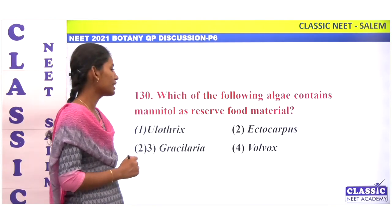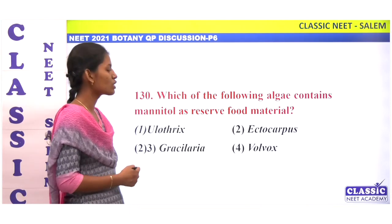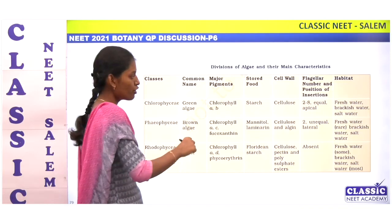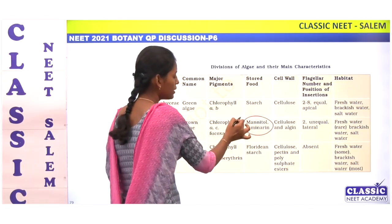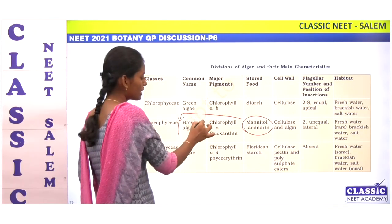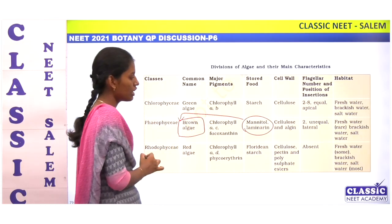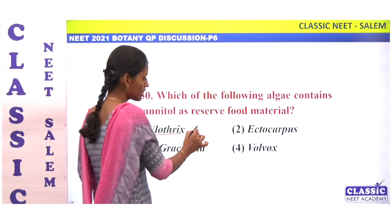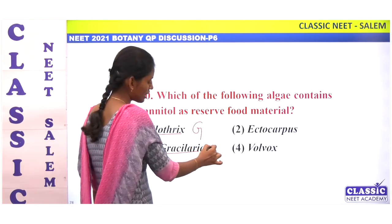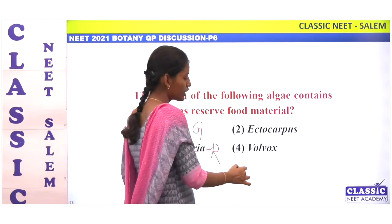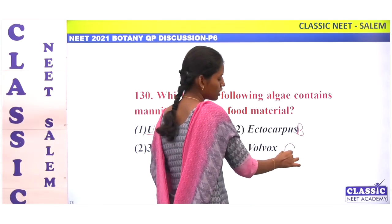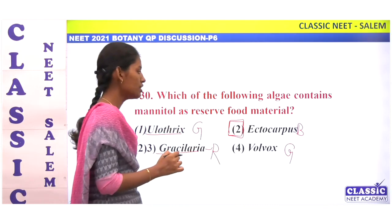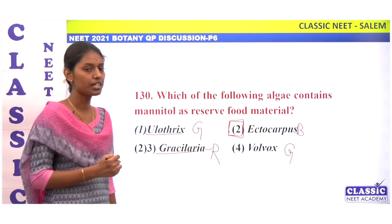Which of the following algae contains mannitol as a reserve food material? The stored food materials mannitol and laminarin are found in brown algae. Example: Ectocarpus is a brown alga whose reserve food material is mannitol and laminarin. The correct answer is Ectocarpus.